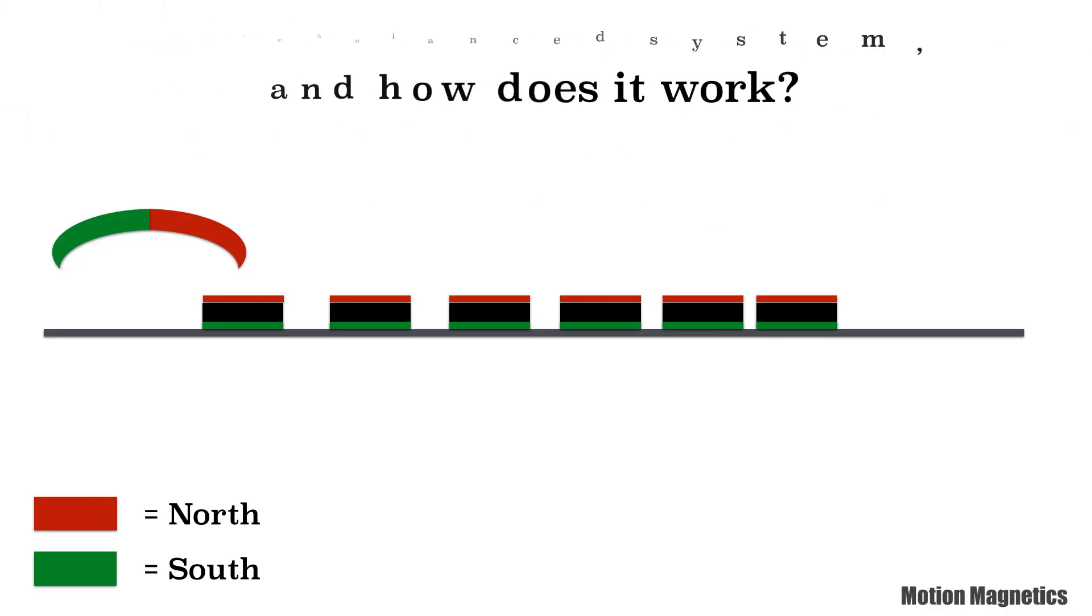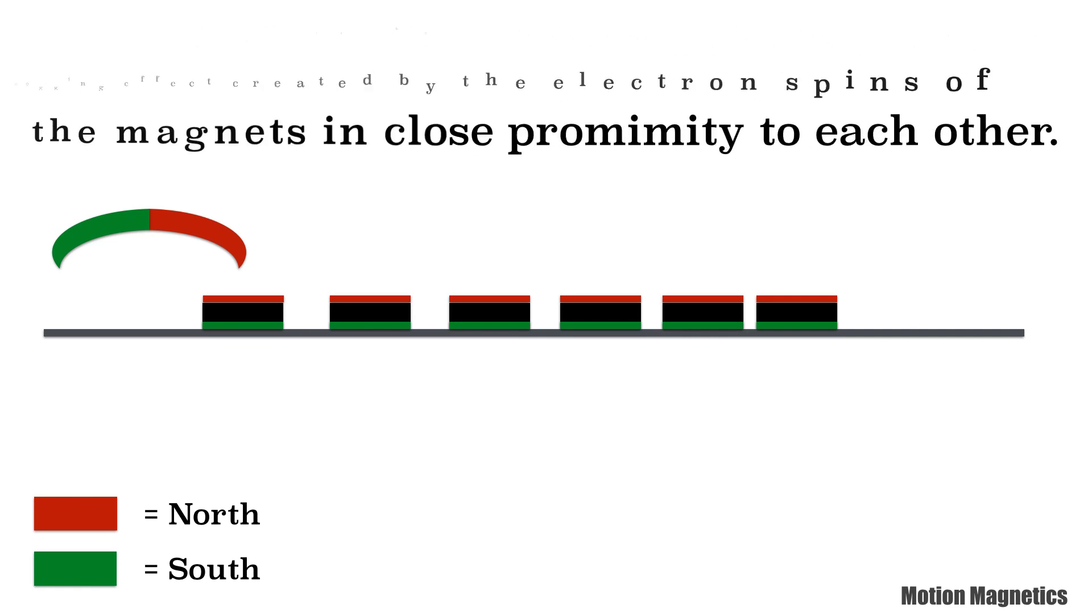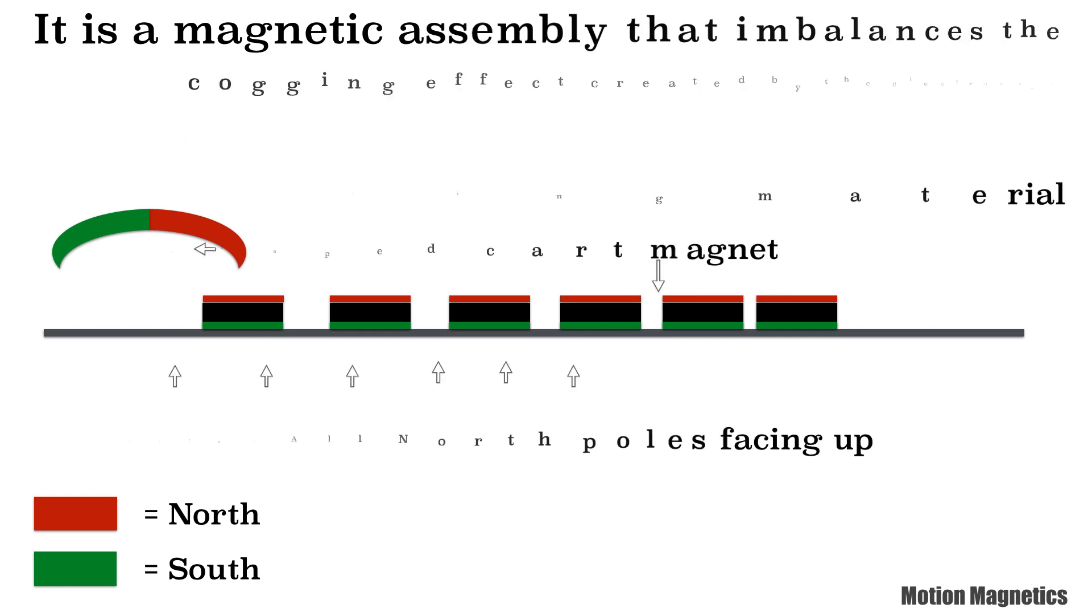Now what exactly is an imbalanced system, and how does it work? It is a magnetic assembly that imbalances the cogging effect created by the electron spins of the magnets in close proximity to each other.